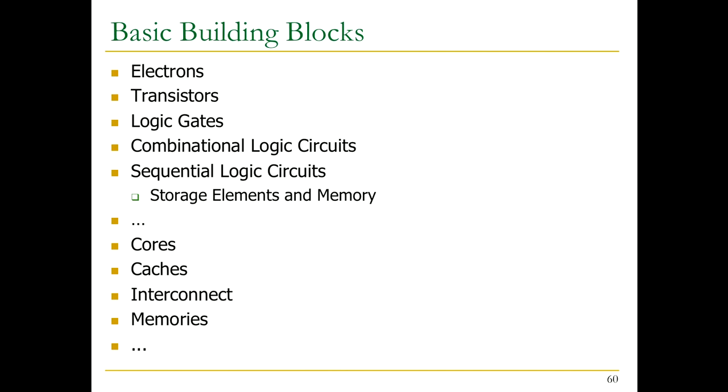The electron is one basic building block, but we cannot manipulate electrons directly. So we create abstraction layers on top of this. We build a transistor that can work with the electrons. Then logic gates on top of those transistors. Then combinational and sequential logic circuits on top of that. Then storage elements and memory. On top of that, cores, caches, interconnects, and memories. And on top of that, computers. It's really a very principled way of building things.